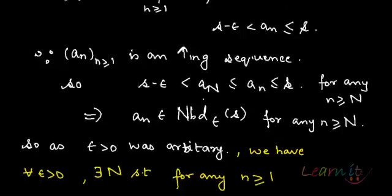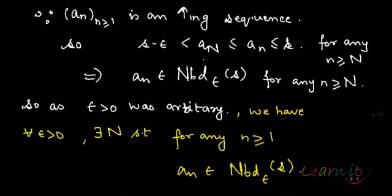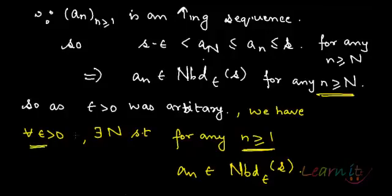That is what we wanted to prove. We found that for any epsilon, since epsilon was arbitrary, we can always find such an N so that a_n lies in the epsilon neighborhood of S for any n greater than or equal to capital N.